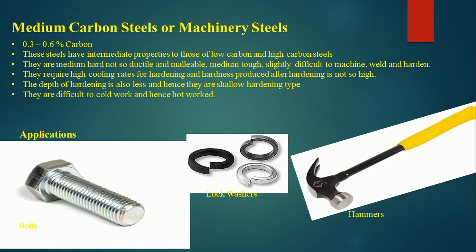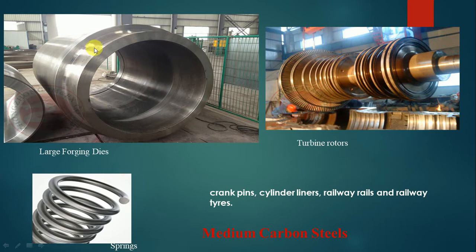Medium carbon steels are difficult to cold work and most of the time need to be hot worked. Applications include bolts, lock washers, hammers, large forgings, springs, turbine rotors, crank pins, cylinder liners, railway rails, and railway tires.